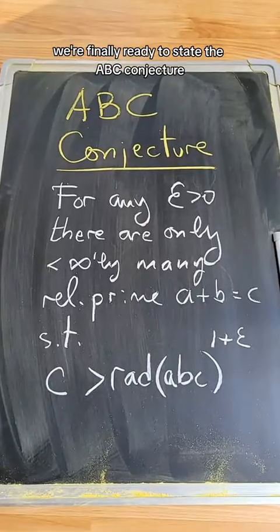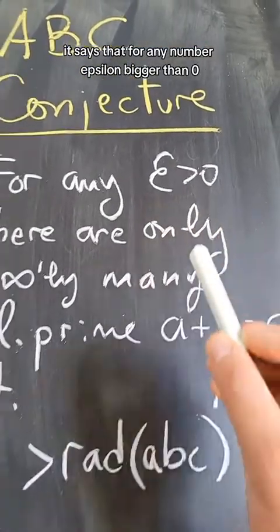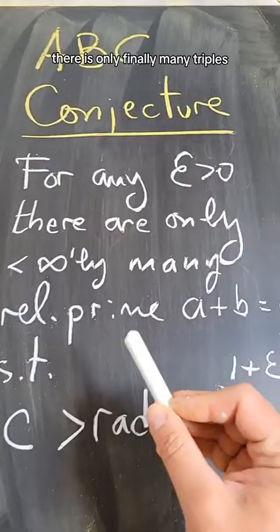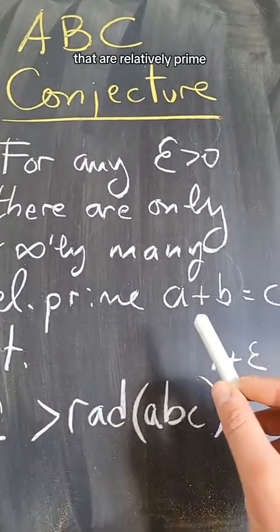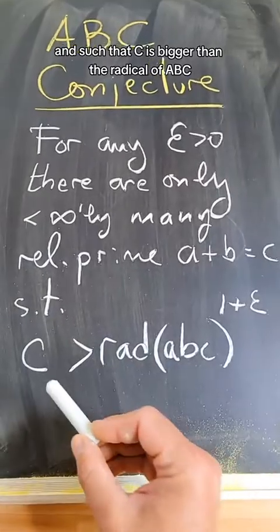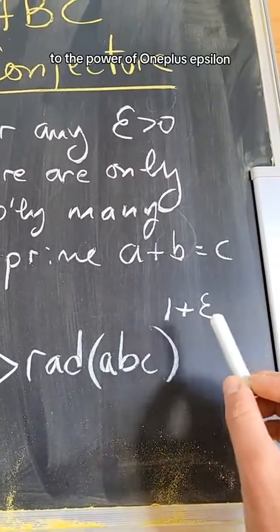We're finally ready to state the ABC conjecture. It says that for any number epsilon bigger than 0, there is only finitely many triples a plus b equals c that are relatively prime, and such that c is bigger than the radical of ABC to the power of 1 plus epsilon.